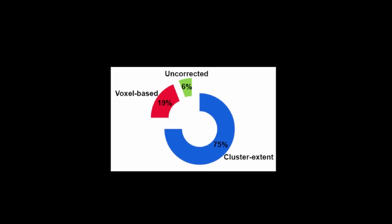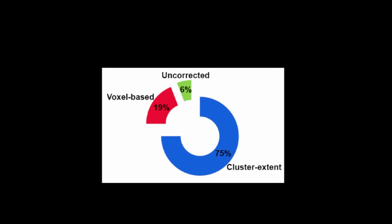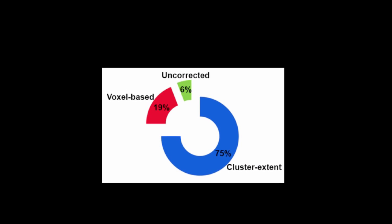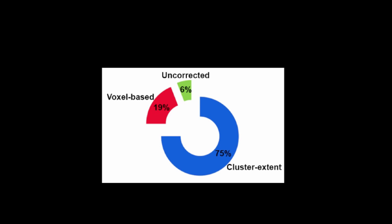This problem is much more widespread because the vast majority — nearly three-fourths of studies — use cluster extent thresholding, while the remainder either use voxel-based thresholding or do not use any correction whatsoever.